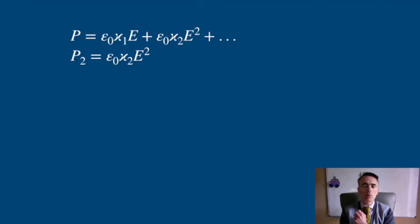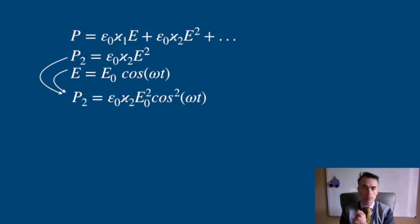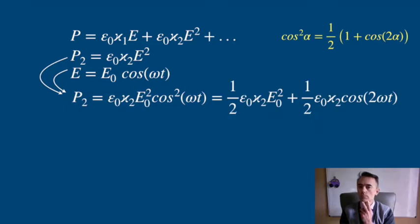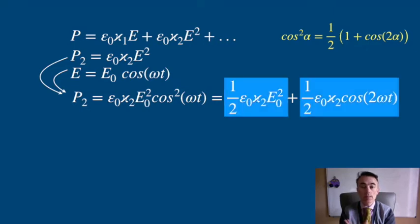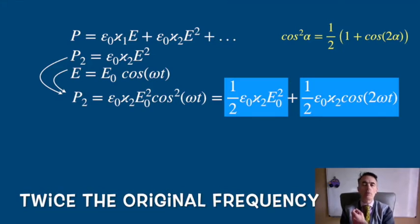For an electromagnetic wave that we describe as a cosine function, the polarization P₂ is written and using trigonometry we write this polarization as a constant term, a DC bias field and an oscillating field that oscillates with twice the original frequency.